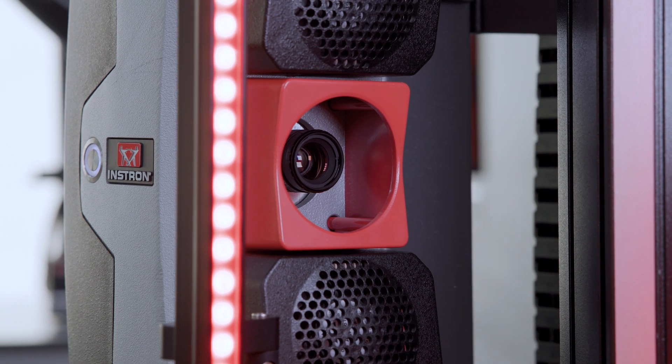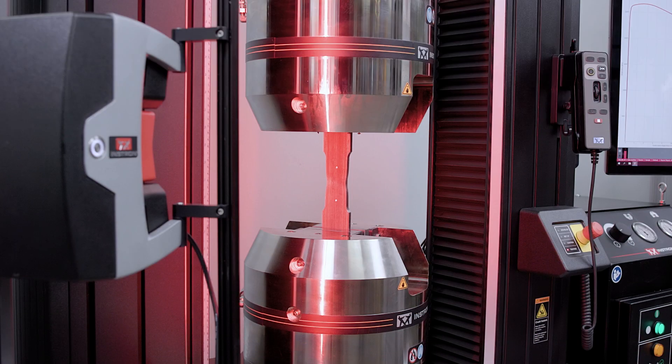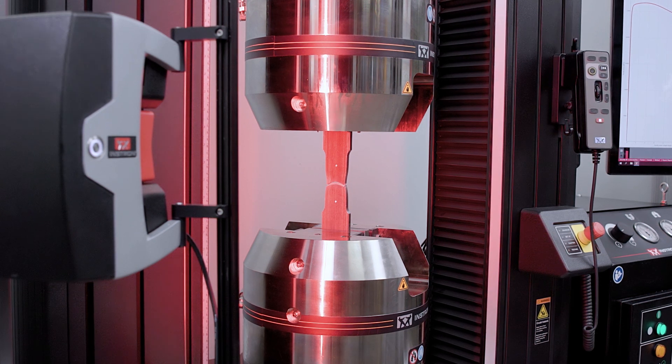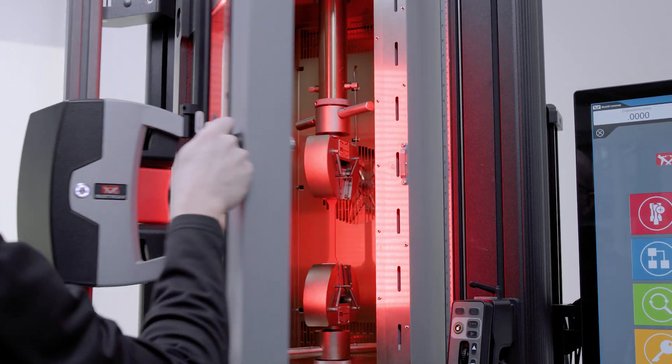The AVE2 provides repeatable measurements down to one micron accuracy and can be used to measure specimen strain from modulus through failure on any material and in any environment without risking damage to the device.